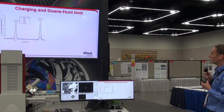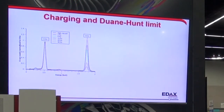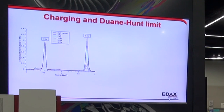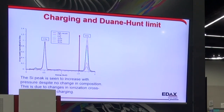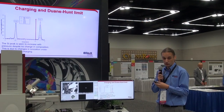This is a spectrum from a silicon dioxide sample. I'm running it in high vacuum and then at increasing pressures throughout. I've normalized everything to the oxygen peak. If you look at the silicon peak, you can see that as I increase my pressure, I get more and more silicon signal — even though this is the same sample with no change in composition. I get a change in the intensity of the x-rays.